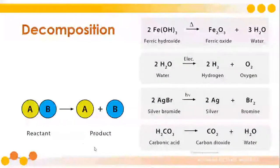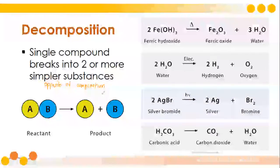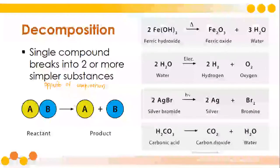The next type is decomposition, wherein a single compound breaks into two or more simpler substances. The formula is AB will produce A and B — the opposite of combination. In combination you're combining two reactants; in decomposition, you're separating the reactant with the help of catalysts. Catalysts are methods that speed up the chemical reaction: we have heat (symbolized by a triangle), electric current, and light. Either of these three can help decompose the reactant into simpler substances.